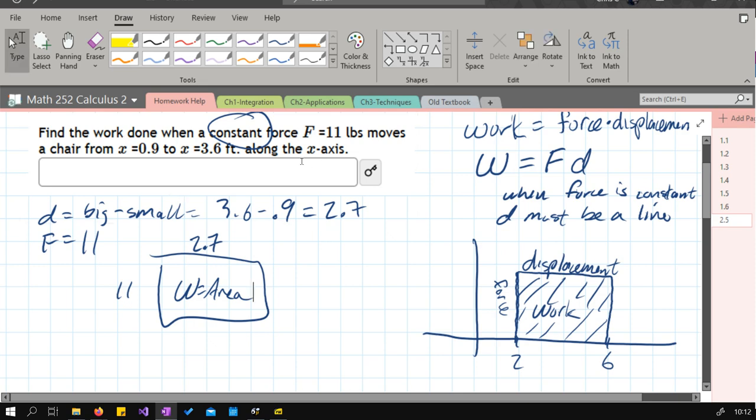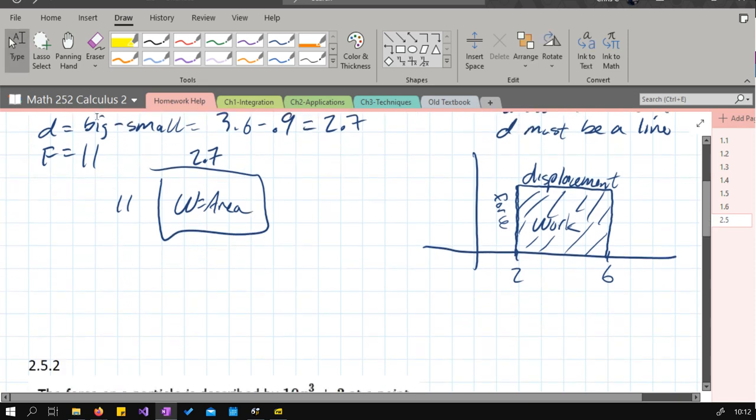What happens next in all the other problems: you no longer have a constant force. How that changes in a physical sense is you now have some force at the beginning, but this force may change over time. Let's say it has this type of shape right here. Here's your start and your end. Now, when you get the area,